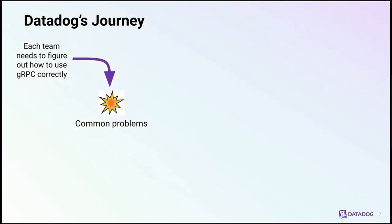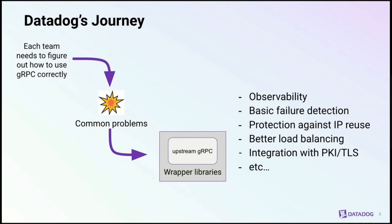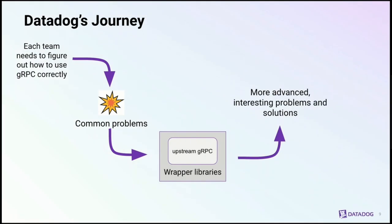At first, users at Datadog were mostly on their own when using gRPC, and soon enough they bumped into a set of common problems. The way we helped developers deal with those problems is by providing in-house gRPC wrappers. When working on these wrappers, we try to be opinionated — we provide a set of reasonable defaults that work for everybody, and expose features as simple boolean flags to minimize UX complexity. This approach also lets us transparently fix problems even without user involvement by adding new default behaviors to the wrappers.